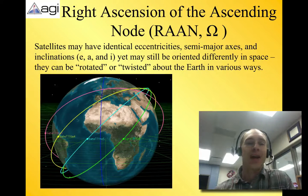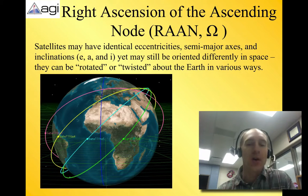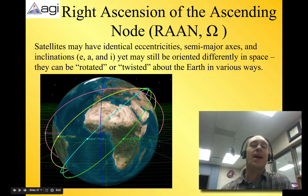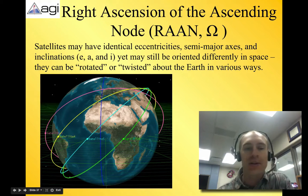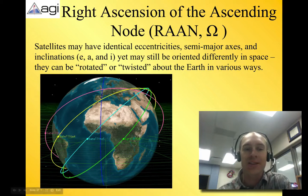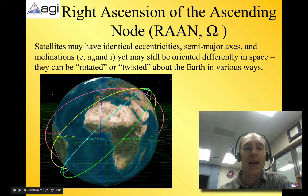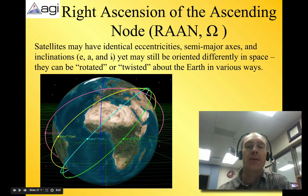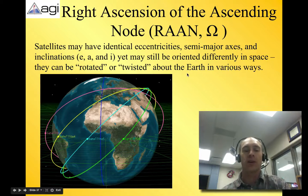Alright, now let's take a look at RAAN, Right Ascension of the Ascending Node. Satellites may have identical eccentricities, semi-major axes, and inclinations, which are the E, A, and I values, but they may still be oriented differently in space. They can be rotated, twisted about the Earth in various ways.